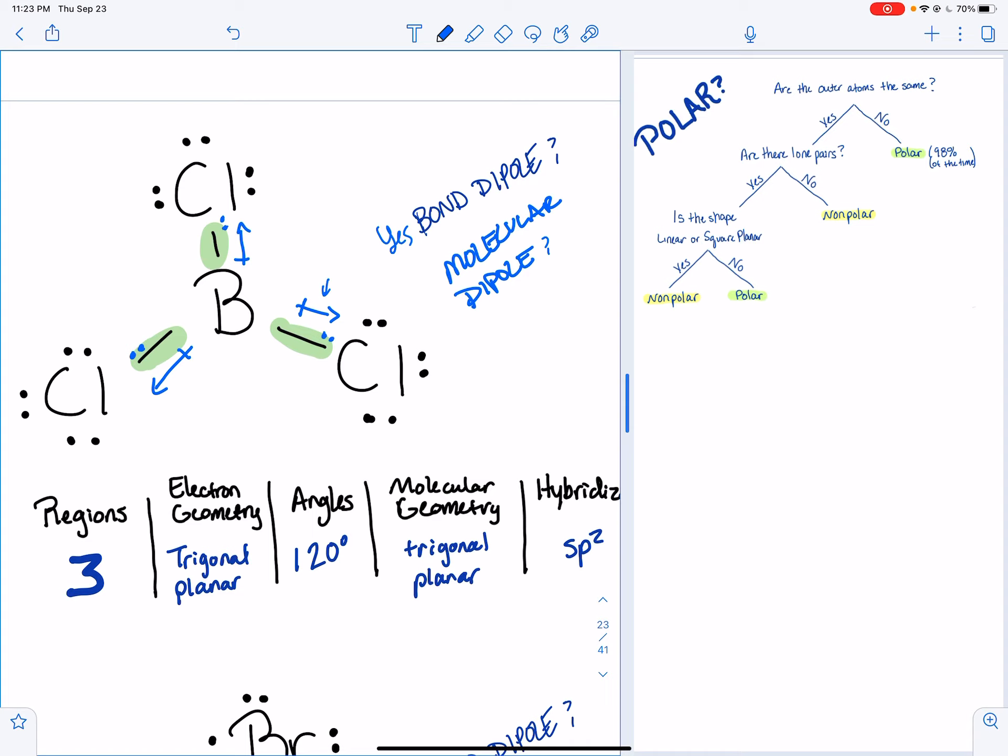And then is there molecular ones? The idea is like, will the other bonds cancel this one out? So if we look at our chart too, it says, are the outer atoms the same? Yes. Are there lone pairs? No. Is the shape linear or square planar? No.